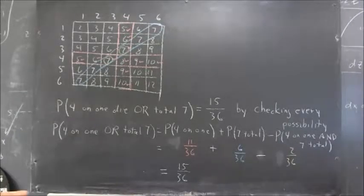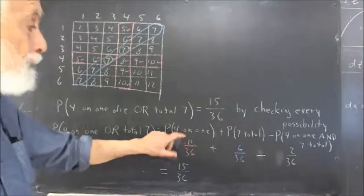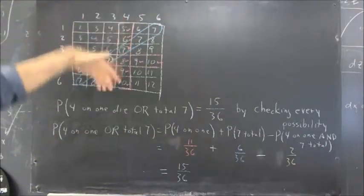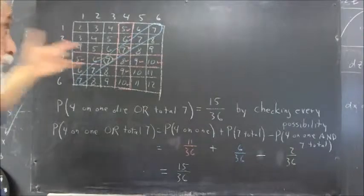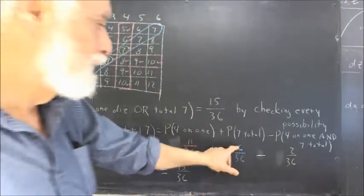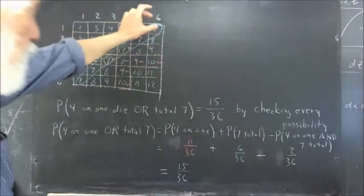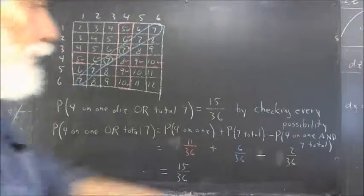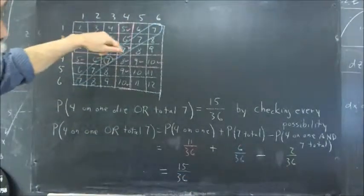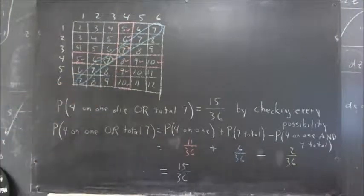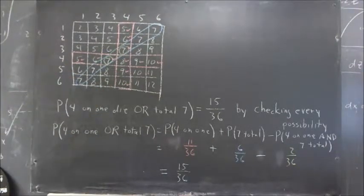We can note the color coding. The pinkish red, 11 out of 36, corresponds to the outcomes that we've outlined in the pinkish red. And the 6 out of 36 for the total of 7 to the blue up here. And the 2 out of 36, I've circled those outcomes in green so we can easily see where they are on the depiction of the sample space.